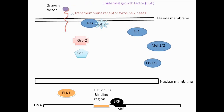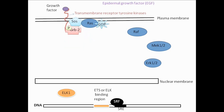First, epidermal growth factor binds to the receptor, leading to phosphorylation of the receptor at the cytoplasmic domain. This causes GRB2 proteins to bind to the cytoplasmic domain of the receptor at the phosphorylated region. Next, the SOS adapter binds to GRB2 on the membrane, becoming localized to the membrane, causing RAS to release GDP and accept GTP.